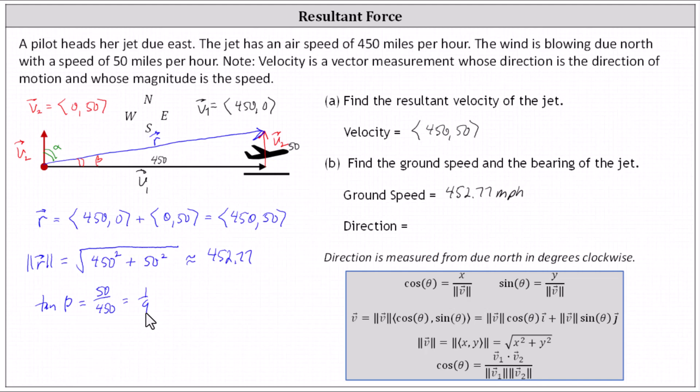So if we take the inverse tangent of both sides of the equation, we have beta equals inverse tangent of one ninth. And now we'll go to the calculator and get an approximation for beta.